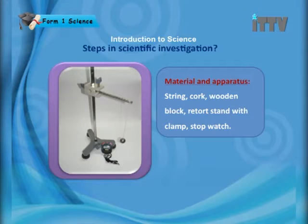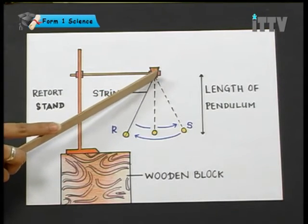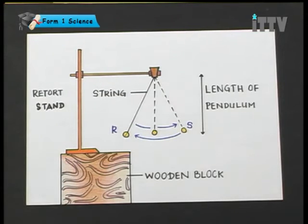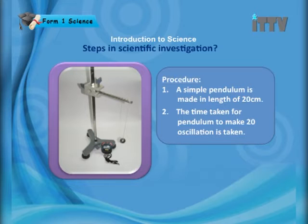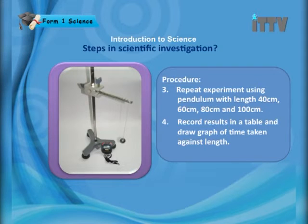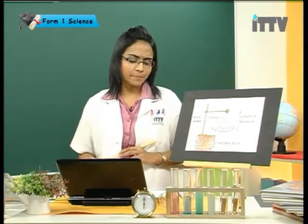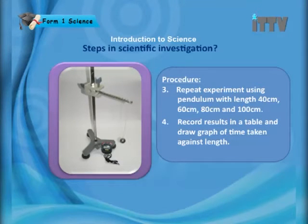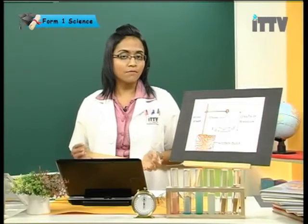Now what are the materials and apparatus needed for this experiment? The cork is placed here, the string hangs from it, and this whole thing is known as the pendulum. The procedures are quite simple. A simple pendulum is made with a length of 20 centimeters. The time taken for the pendulum to make 20 oscillations is recorded. Repeat the experiment using pendulum lengths of 40 centimeters, 60 centimeters, 80 centimeters, and 100 centimeters. Record results in a table and draw a graph of time taken against length.